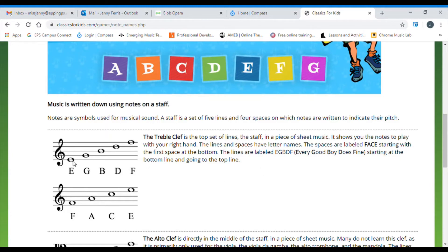For the lines of the stave, starting at the bottom, we have the notes E, G, B, D, and F. And we can use this acronym here, Every Good Boy Does Fine. You may have also heard Every Good Boy Deserves Fruit, Every Good Boy Deserves Freddo Frogs, or Every Good Boy Deserves Ferraris. Whichever acronym you prefer to use, as long as you can remember that the order of the notes is E, G, B, D, and F from bottom to top.